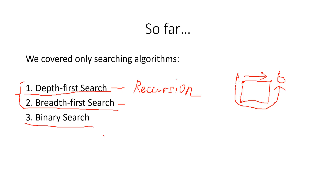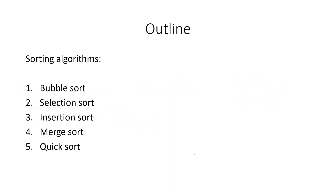The third algorithm we covered is binary search. Binary search has a time complexity of O(log n), which is quite efficient. To apply binary search you need sorted input data — for example a sorted array or sorted list — and you need to know the borders of the area where you apply the search.